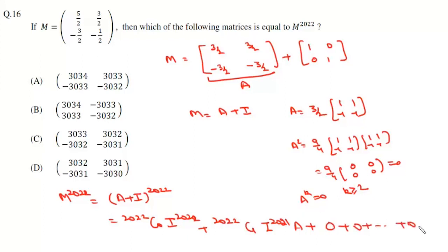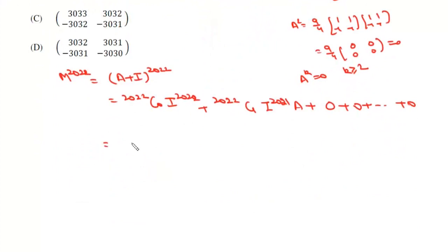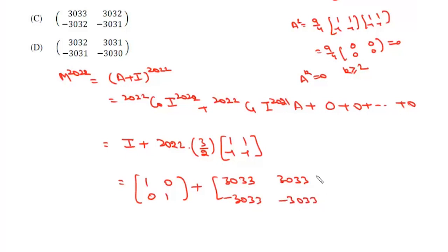So M to the power 2022 will be 2022 C0, which is 1, and I to the power 2022 is nothing but I, and here it will be 2022 into I and I into A is A. So it will be this A, and A is 3/2 into 1 1 minus 1 minus 1. Now this is 1 0 0 1, and here it is 3033, 3033, minus 3033, and minus 3033. So it will be 3034, 3033, minus 3033, and minus 3032.